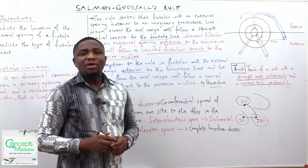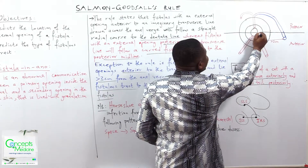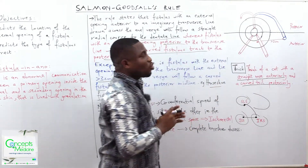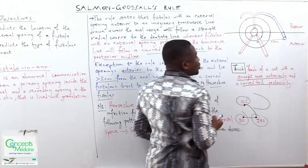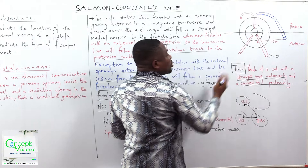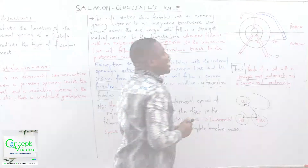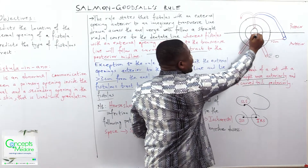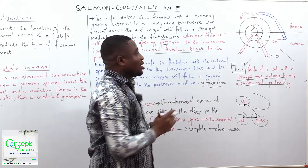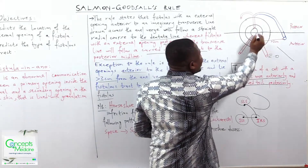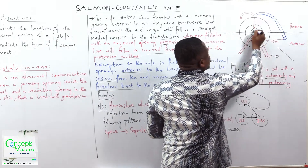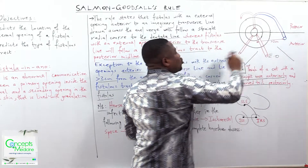Let's demonstrate the Salmon-Goodsall Rule. This is our anal verge, and this is the imaginary transverse line drawn across it. We will take this as the anterior portion and this as the posterior aspect. So, if you have an external opening located anterior to the imaginary transverse line, we are expecting it to take a straight radial course to the dentate line. When we say straight radial, it means it is going to be inclined at an angle — it is not vertical, it is inclined at an angle. So it will take a straight radial course to the dentate line if the fistula has its external opening anterior to the transverse line drawn across the anal verge.